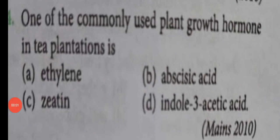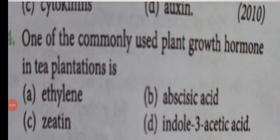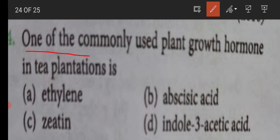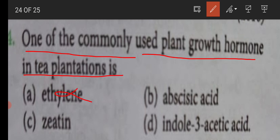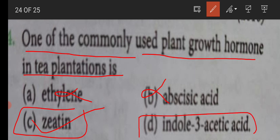Good afternoon friends. Today I will talk about a very simple and important multiple choice question. One of the commonly used plant growth hormones in tea plantation is: option one, ethylene - no; option two, abscisic acid - no; option three, giatine - yes, this is the correct one; option four, indole acetic acid, that is auxin - also incorrect.